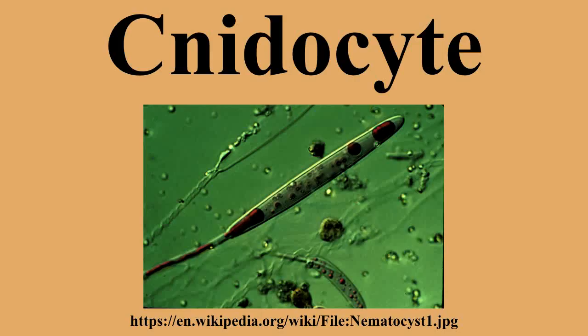Snidarians prey on fish and crustaceans. A Snidocyte fires a structure that contains the toxin from a characteristic subcellular organelle called a Snidocyst. Nematocyst is also called the stinging organ. The toxin is usually a hypnotoxin, which is responsible for the stings delivered by a Snidarian structure and function.